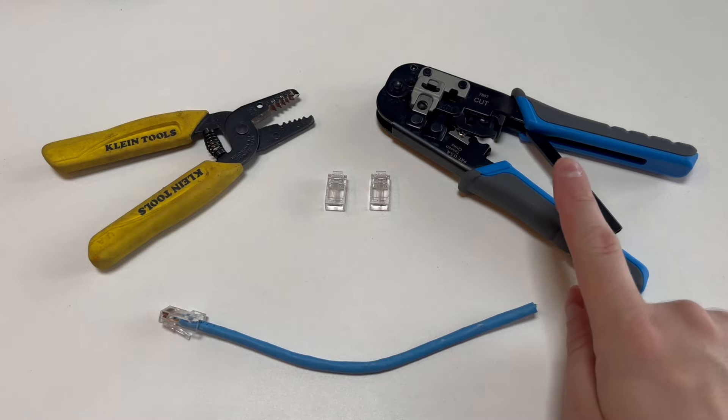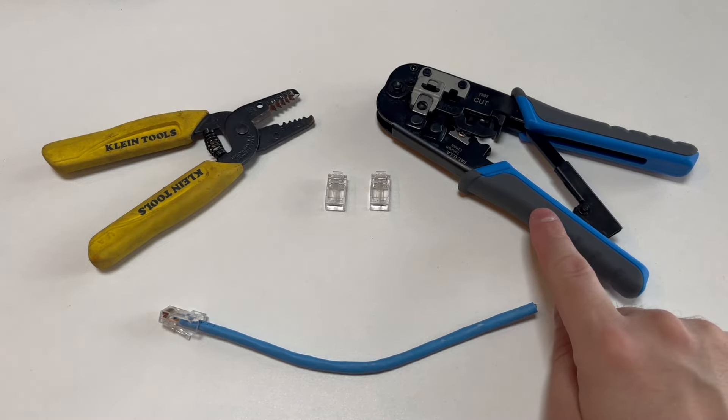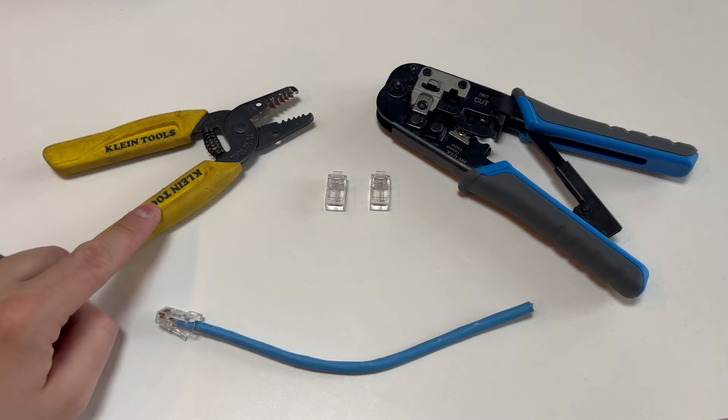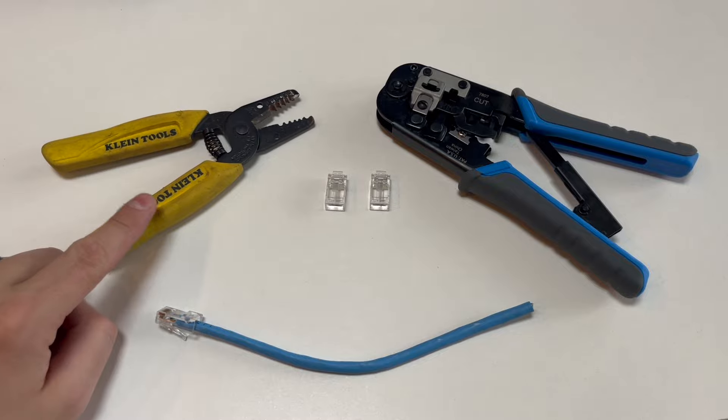But before we begin, you'll want to pick up a pass-through ethernet crimping tool and some pass-through RJ45 connectors, as well as have a pair of wire strippers on hand. I'll leave links in the description below to the ones I recommend.